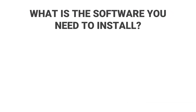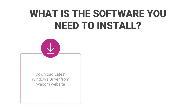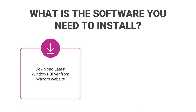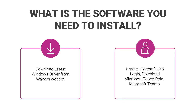So, what is the software that you need to install? You need to download the latest Windows driver from the Wacom website, and don't forget to restart your PC after driver installation. Create a Microsoft 365 login, download Microsoft PowerPoint and Microsoft Teams. Then, how to connect your Wacom pen display with your PC?